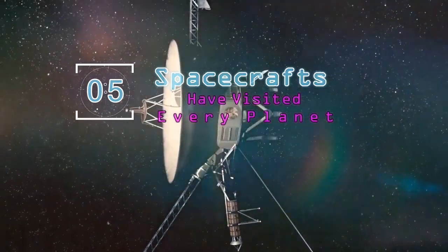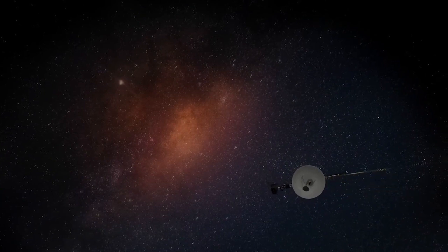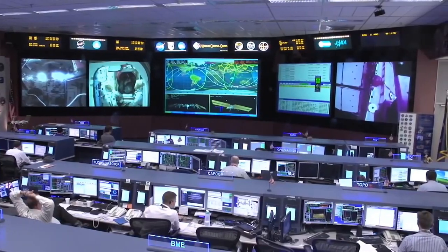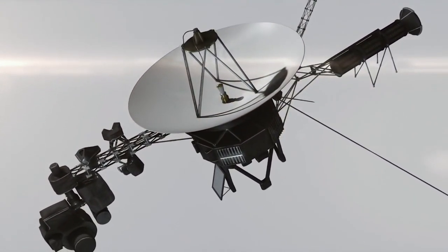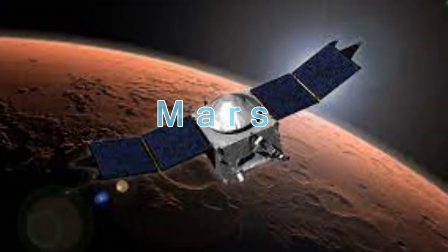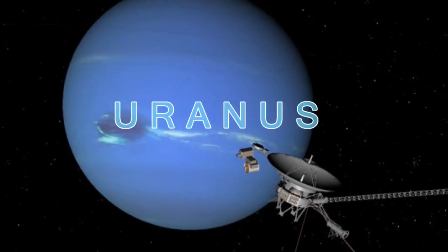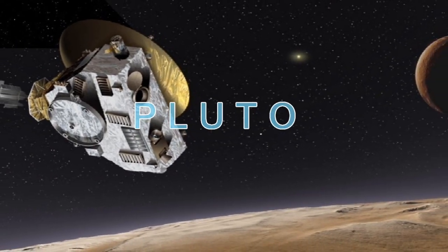Spacecrafts have visited every planet. Space exploration has been on for about 60 years, but scientists have been able to send spacecraft to every planet in our solar system, including Mercury, Venus, Earth, Mars, Jupiter, Saturn, Uranus, and Neptune, as well as two dwarf planets called Pluto and Ceres.